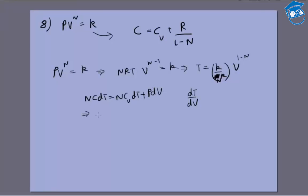Which gives me c equals cv plus p dV by n dT. And the whole question is of getting p dV and dT in the same terms. So from this formula you can get dT by dV, which will be the inverse of dV by dT. You already know p, which is k V to the power minus n. You put all that in, what you'll get is cv plus r by 1 minus n.